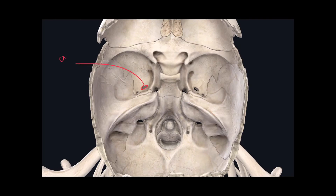Some of these holes should already look familiar — such as the oval foramen of the sphenoid bone, the optic canals of the sphenoid bone, and the foramen spinosum of the sphenoid bone. However, there are two different sets of holes that we didn't ever learn. The first one is just posterior to the petrous part of the temporal bone and found on the anterior portion of the occipital bone. This hole is called the jugular foramen. We don't parent it to anything because it's made by two separate bones.